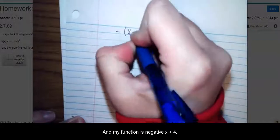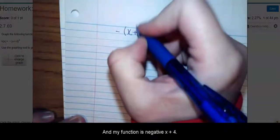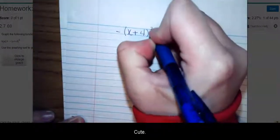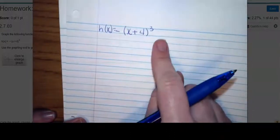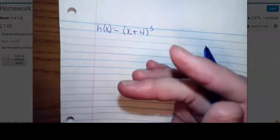We want to graph a function: negative (x+4)³. First, I need to know what my parent function is. Where is your variable? It's not anything special like in a denominator or under a radical.